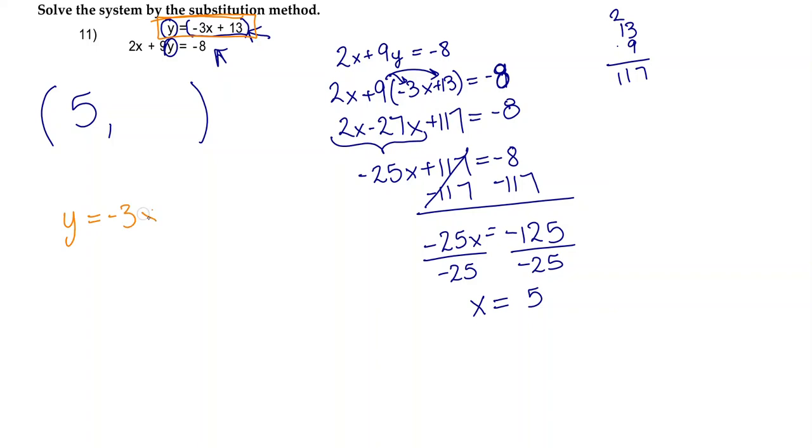And now I'm going to plug in 5 for x in this equation. So this is going to read y equals negative 3 times 5 plus 13. And now I'm just going to simplify. So this is going to read y equals negative 3 times 5 is negative 15. Bring down my plus 13.